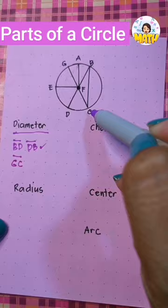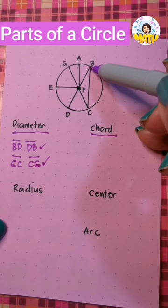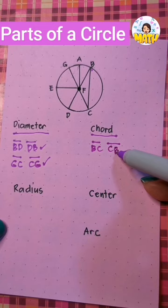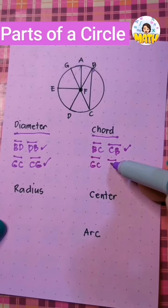Let's find a chord here. Chord is a line segment that joins any two points on the circle. We have line segment BC or CB. Also, a diameter is a chord, and it is the longest chord in the circle.